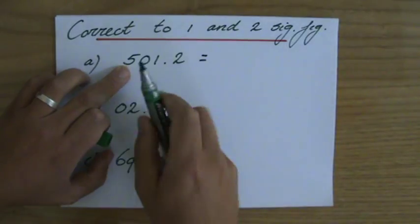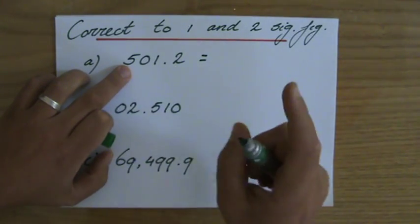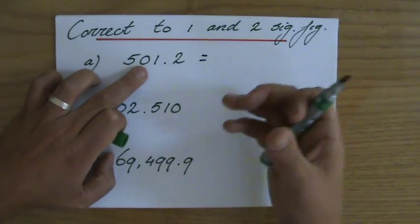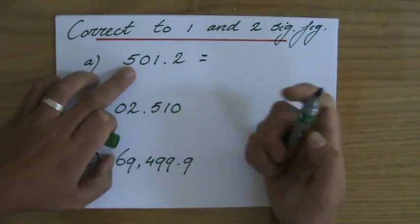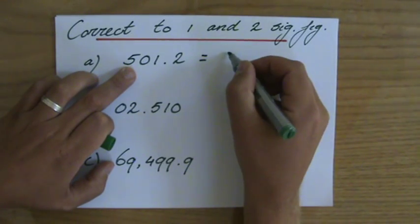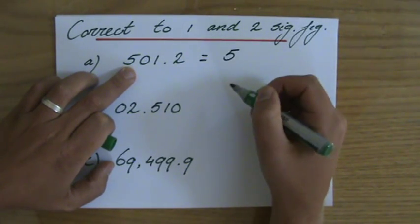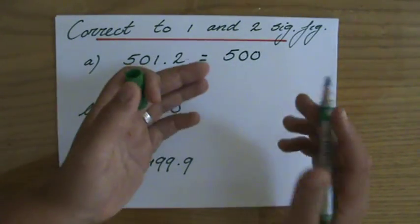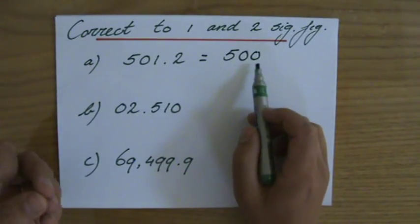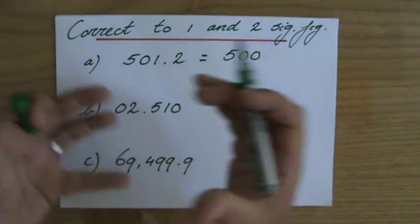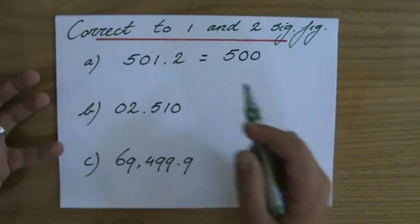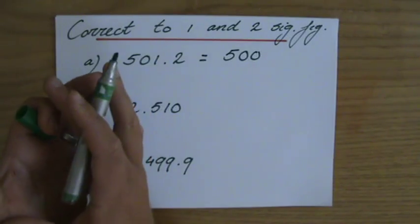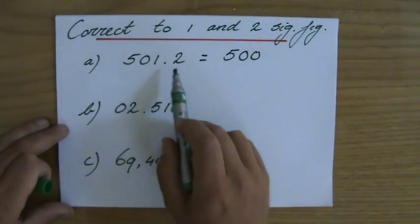Whether it stays a five or goes up to a six depends on the next number. If it's five or higher, the five goes up; in this case it's lower than five, so the five stays. To one significant figure, the answer is not just five — it's going to be 500, because you have to put those zeros there as placeholders to keep the number in its correct context. So 501.2 is 500 to one significant figure.